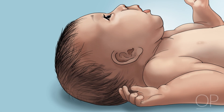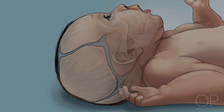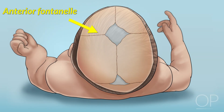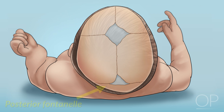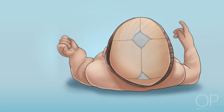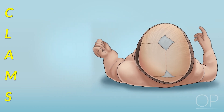What is the shape of your patient's head? A newborn skull is made up of several bony plates that meet along flexible cranial sutures. In the center they form a soft spot known as the anterior fontanelle. There is also a smaller fontanelle in the back, the posterior fontanelle. The first letters of the cranial sutures and fontanelles spell out the word CLAMS.